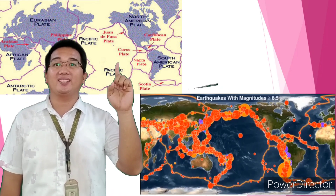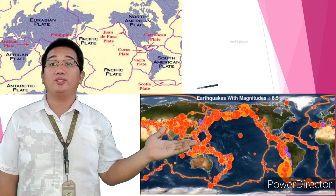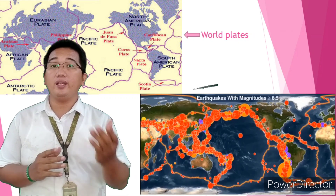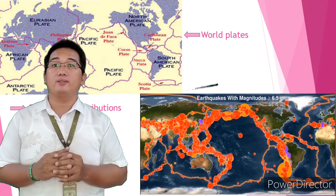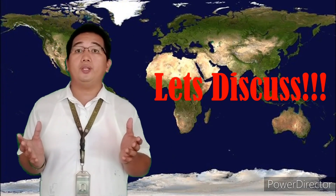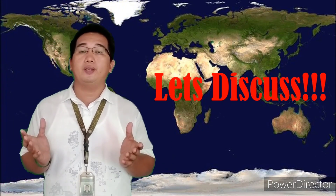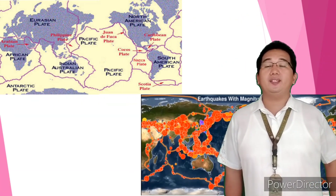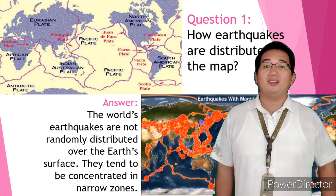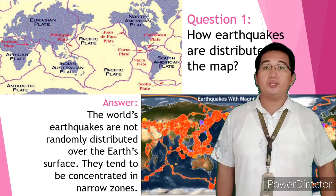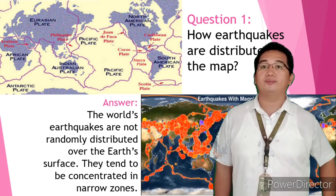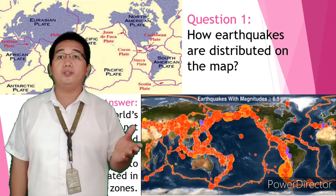Map number two shows the earthquake distributions of the world. So, how does the earthquake distribution of the world relate to the location of the world's plate boundaries? By looking and analyzing map number two, we can easily answer that the world's earthquakes are not randomly distributed over the Earth's surface, but tend to be concentrated in narrow zones. These narrow zones are found where the plate boundaries are also located.